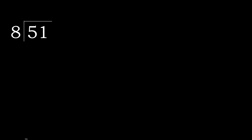51 divided by 8. 5 is less, therefore next. 51 is not less, therefore with 51. 8 — multiply by which number is nearest to 51 but not greater.